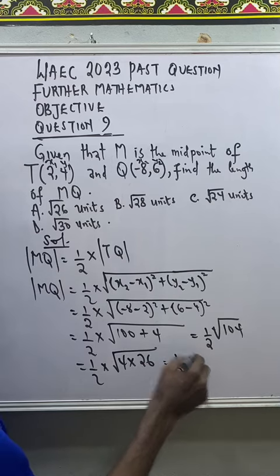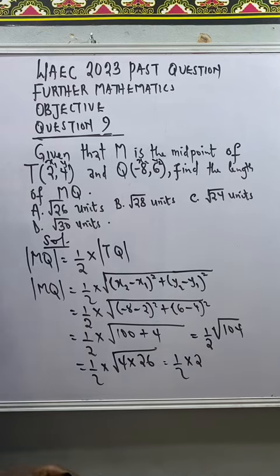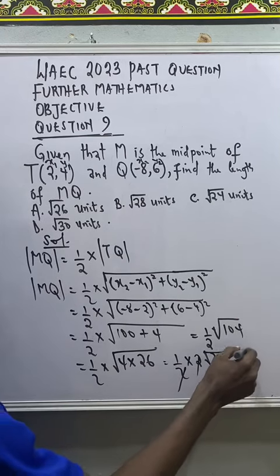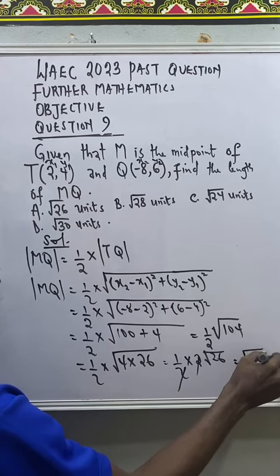So I can rewrite this as 2. Square root of 26 is not a perfect square, that's root 26. So the result is root 26 units.